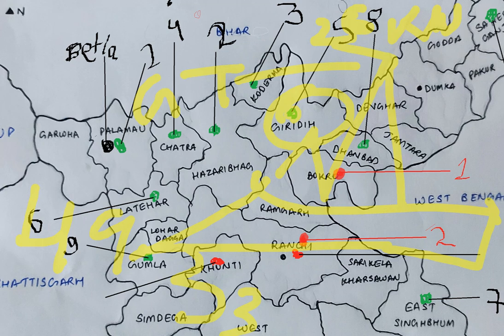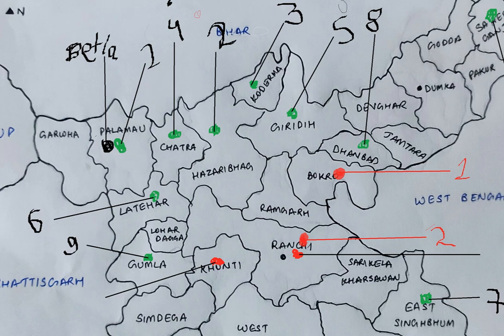It is a mixed deciduous forest. Major species include spotted deer, langur, peafowl, and cuckoo. Parasnath Wildlife Sanctuary was established in 1981.